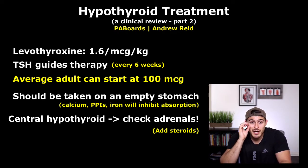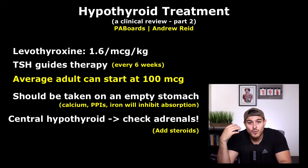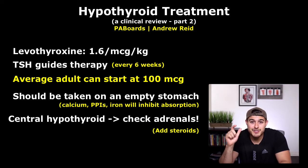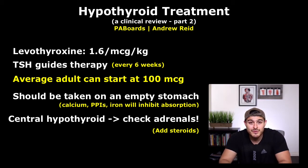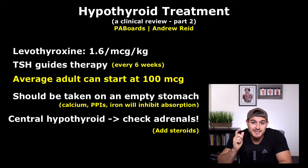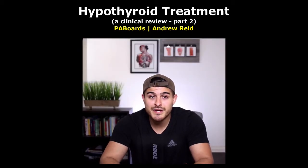For subclinical hypothyroidism, most healthy adults without symptoms should not be treated until TSH is over 10. Once TSH reaches about 15, it is very likely the patient will eventually progress to overt hypothyroidism. If symptoms are present, treatment of subclinical hypothyroidism can be considered even with a TSH of less than 10.